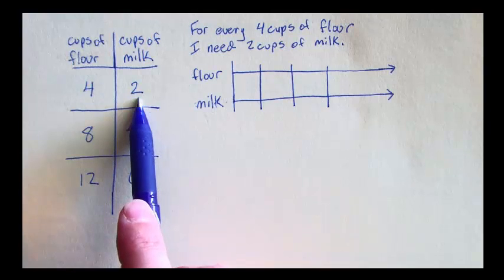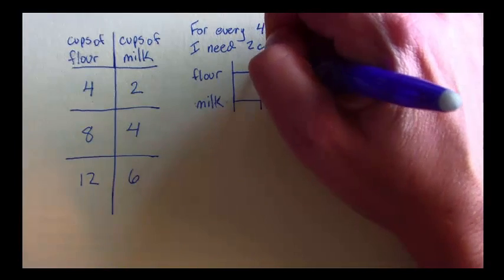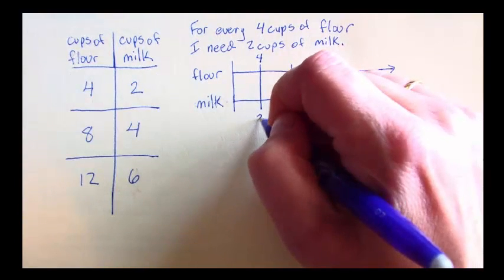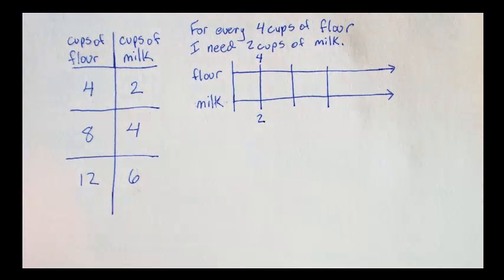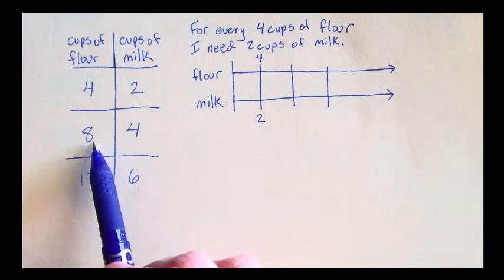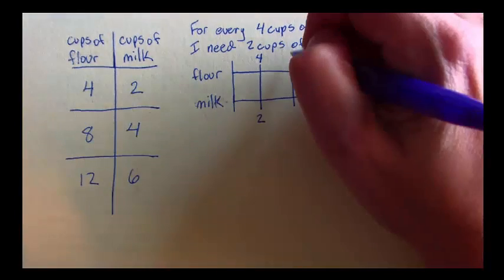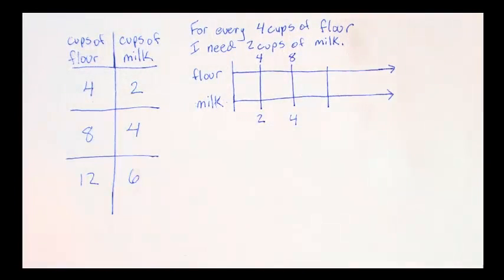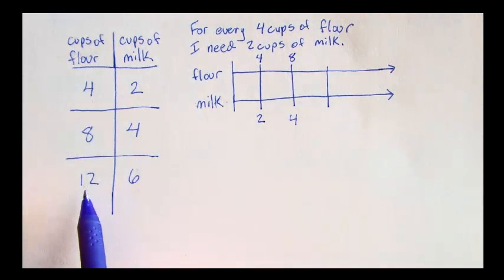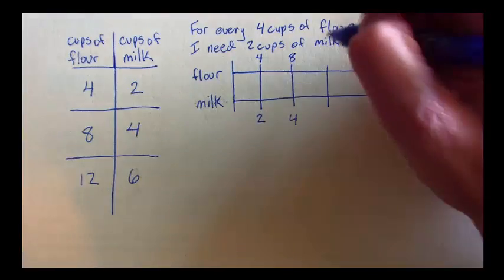If I put this on my double number line, 4 cups of flour and 2 cups of milk are across from each other. It also shows that I need 8 cups of flour for 4 cups of milk, and I need 12 cups of flour for 6 cups of milk.